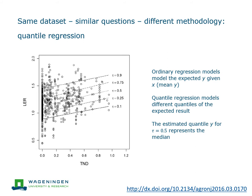With the same dataset, yet another analysis was performed using quantile regression. Rather than modeling the average response and variability around it, quantile regression directly estimates the quantiles of the response — for instance, at tau = 0.5 this gives the median LER as a function of TND, and at the 90th percentile it gives the LER value you will get at a given TND. This was an interesting new use of the existing data.